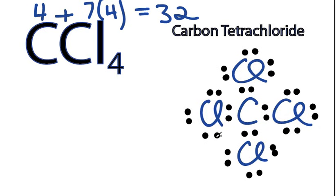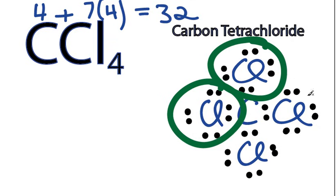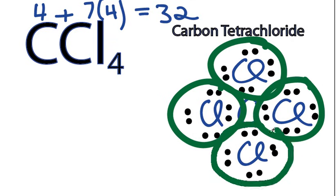Now we want to see if we have octets. All of the chlorines have 8 valence electrons around them. That means that their outer shells are full and that they have octets.